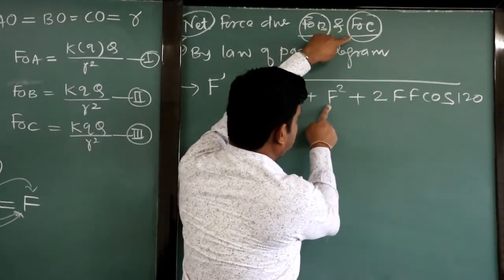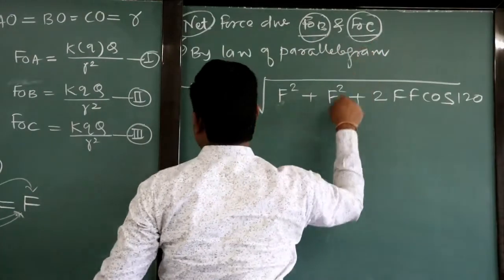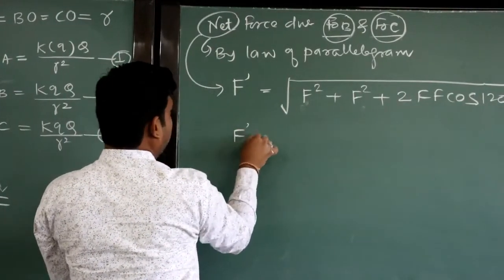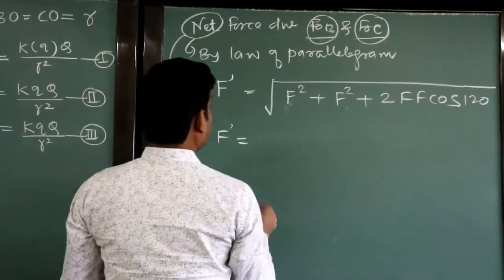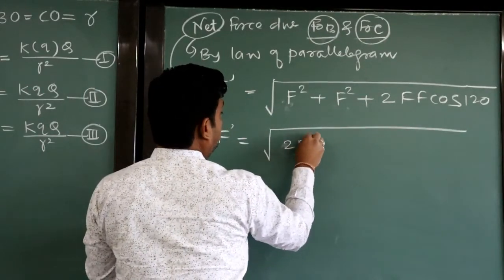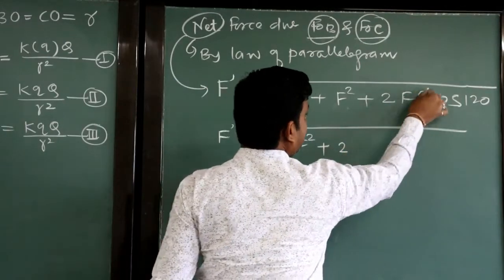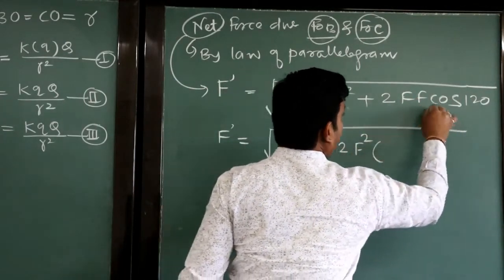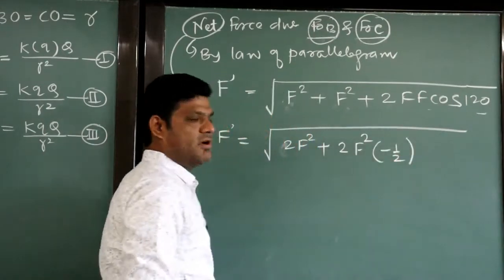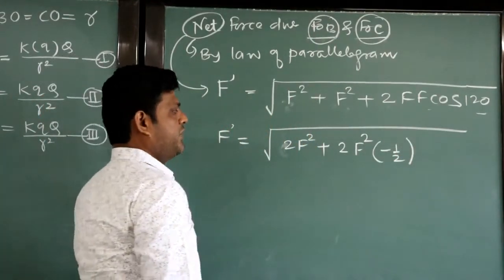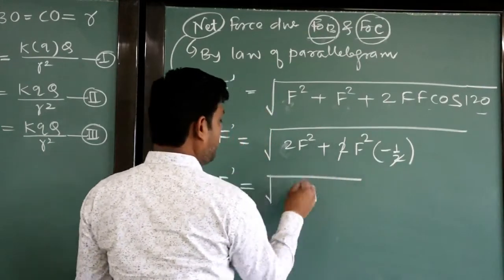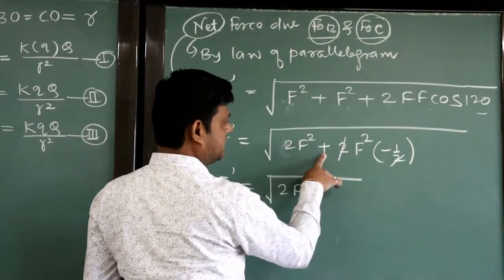FOB equals F and FOC equals F. By the parallelogram law: F' = √(F² + F² + 2·F·F·cos120°). cos120° = −1/2, so the 2 and 1/2 cancel, giving F' = √(2F² − F²) = √(F²).